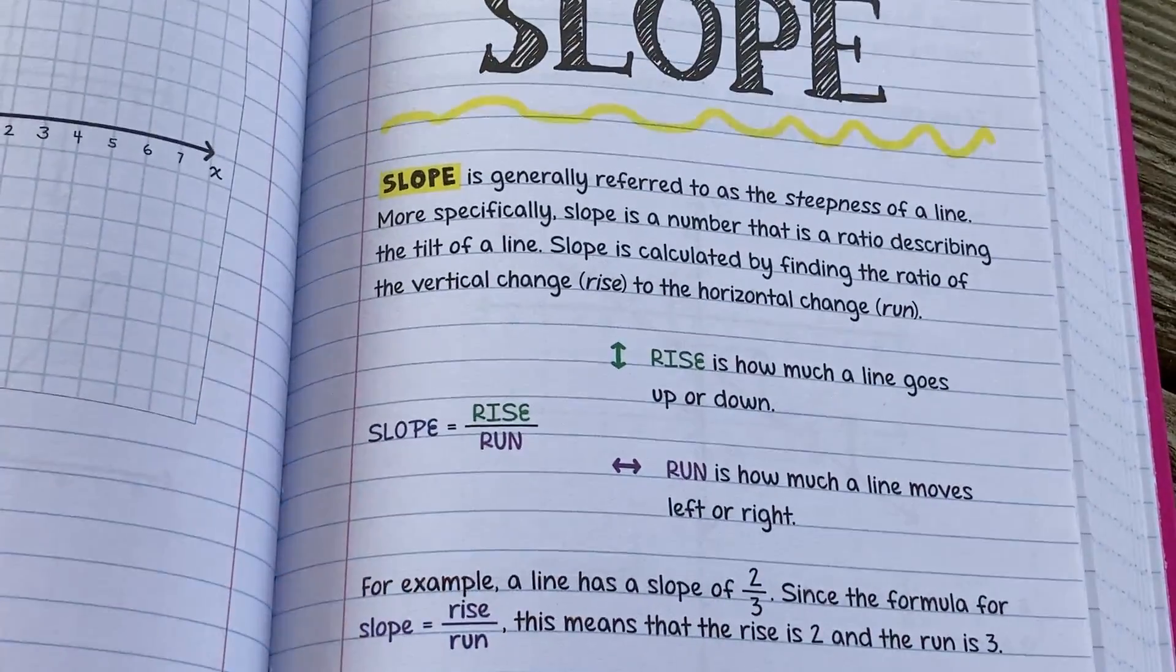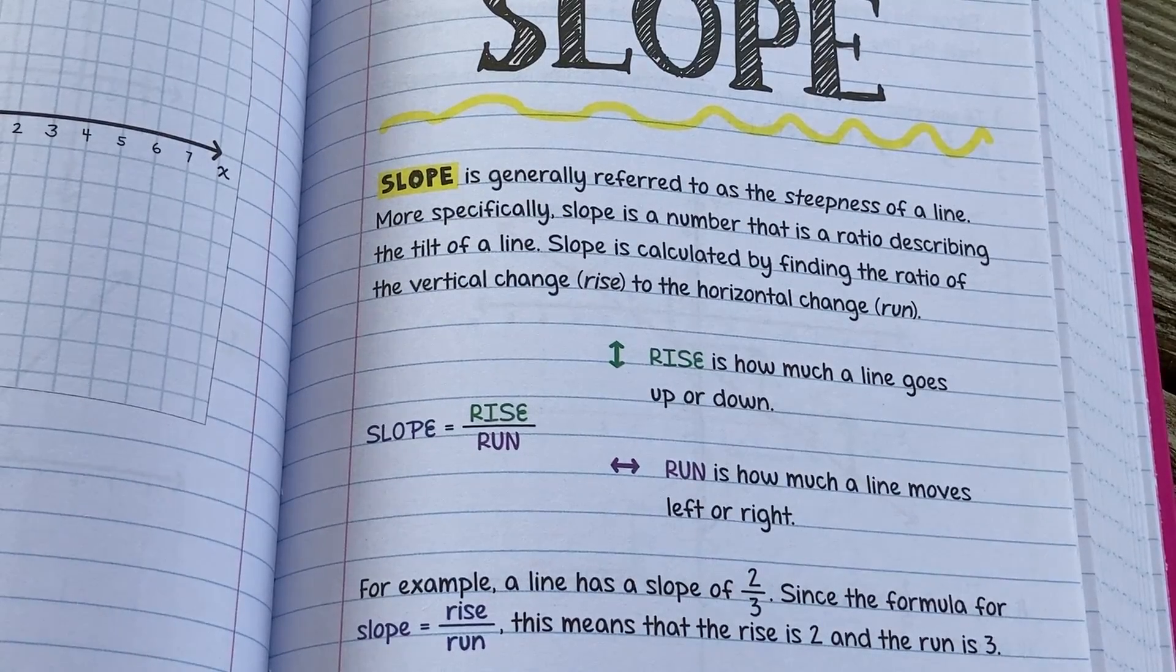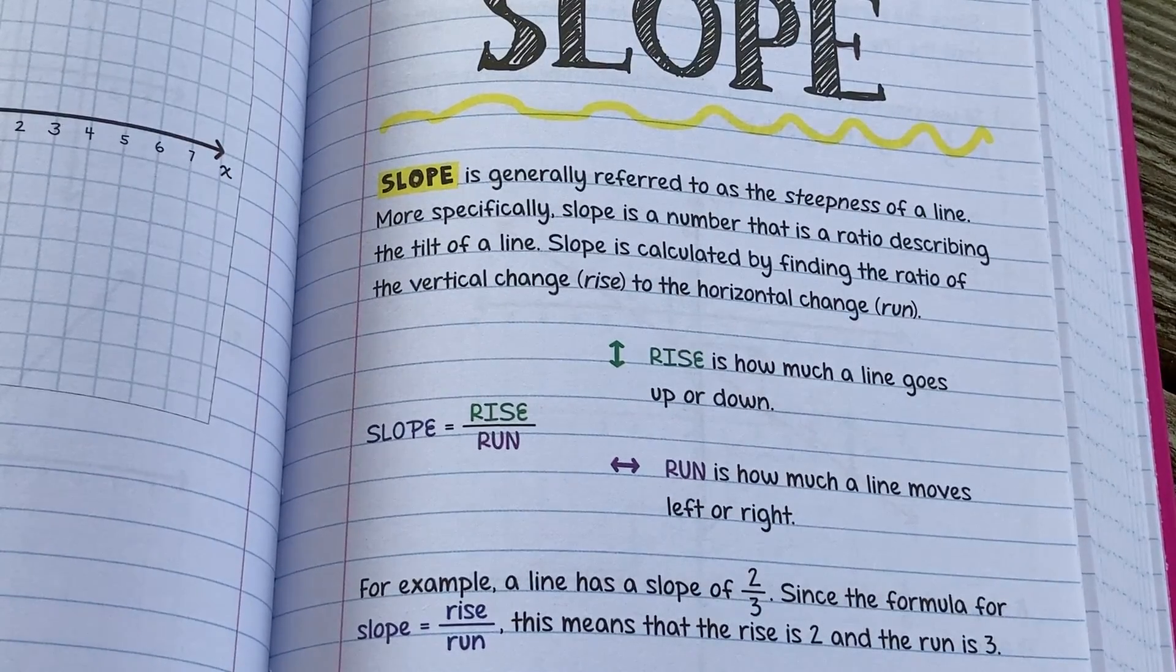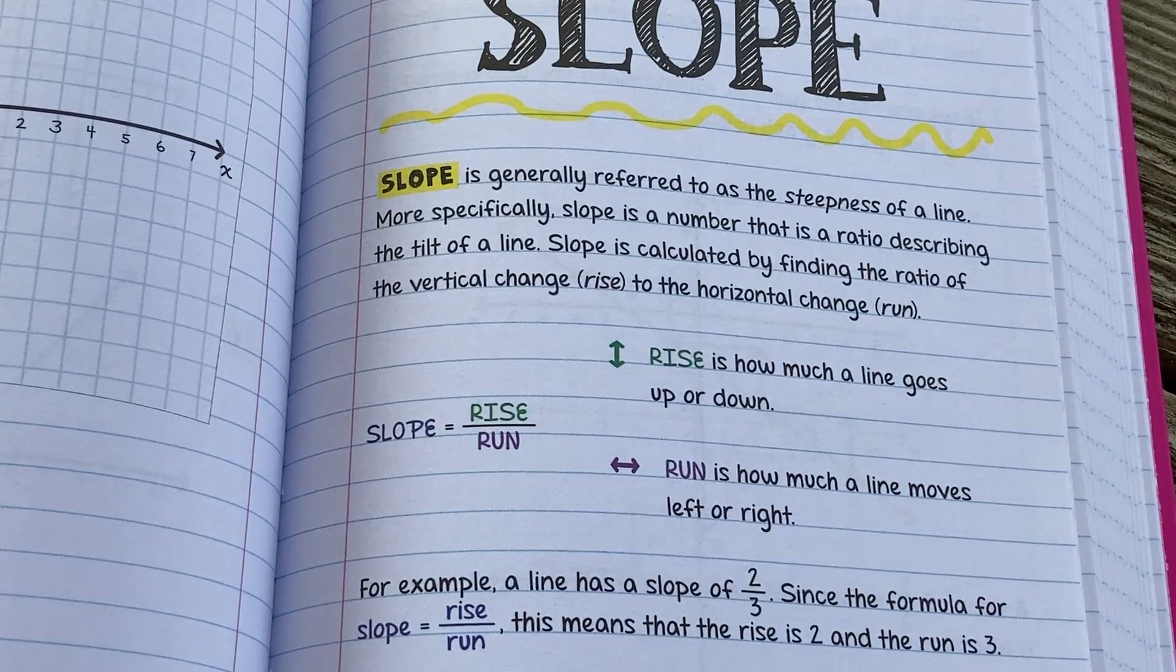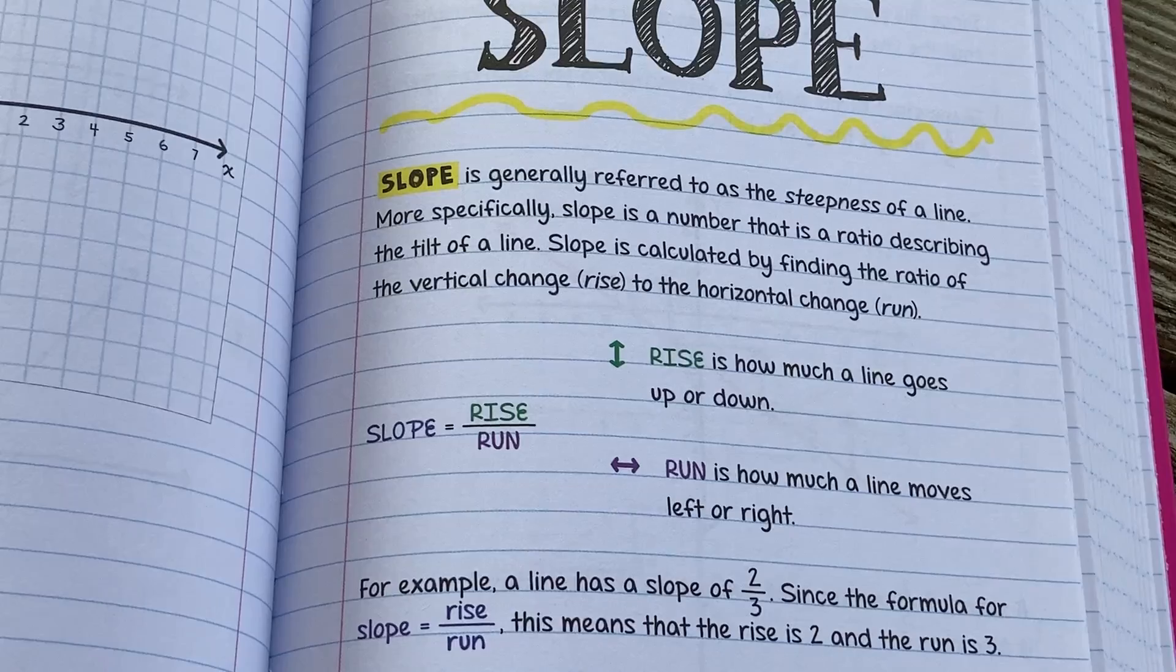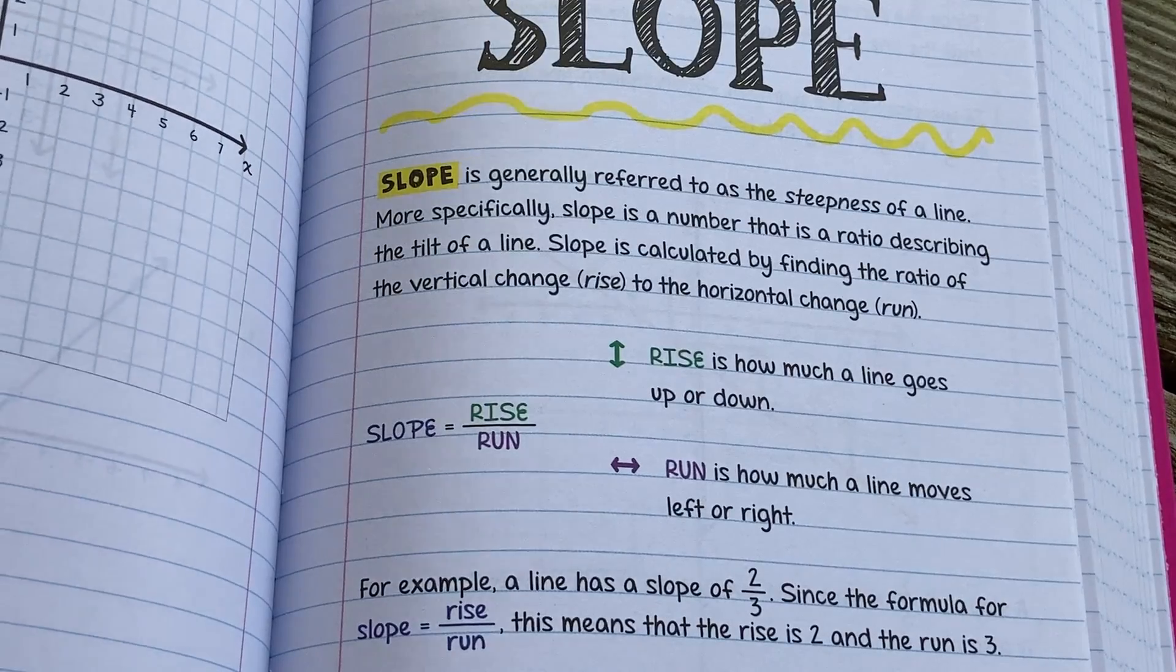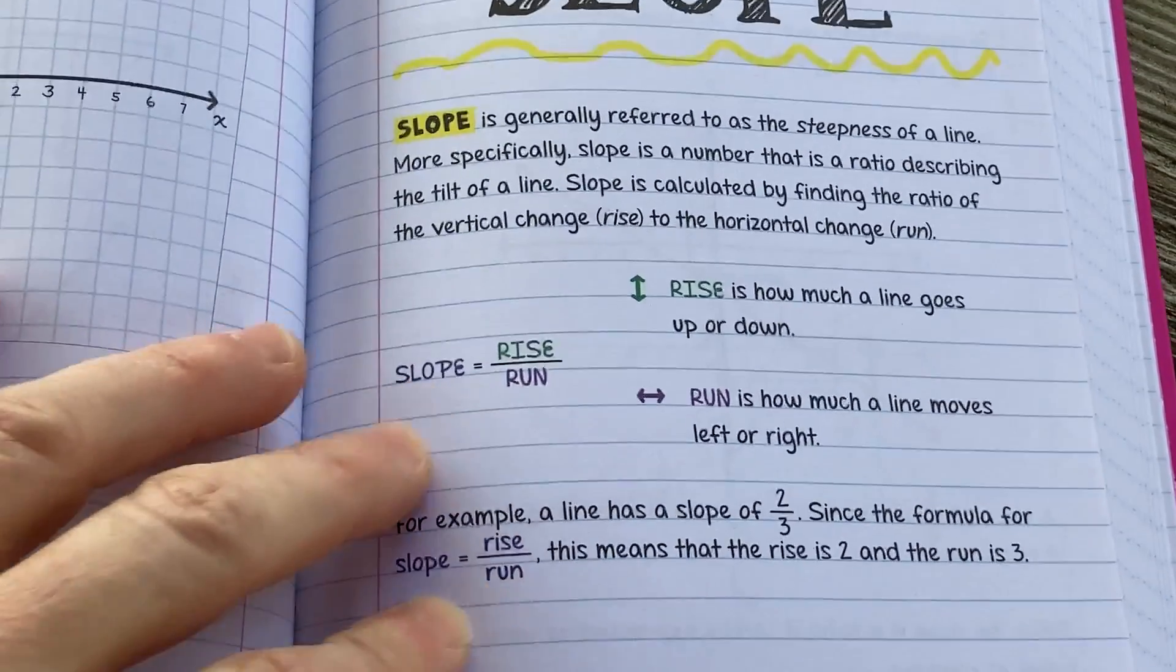Slope is generally referred to as the steepness of a line. More specifically, slope is a number that is a ratio describing the tilt of a line. Slope is calculated by finding the ratio of the vertical change, rise, to the horizontal change, run. Slope is rise over run. Rise is how much a line goes up or down. Run is how much a line moves left or right.